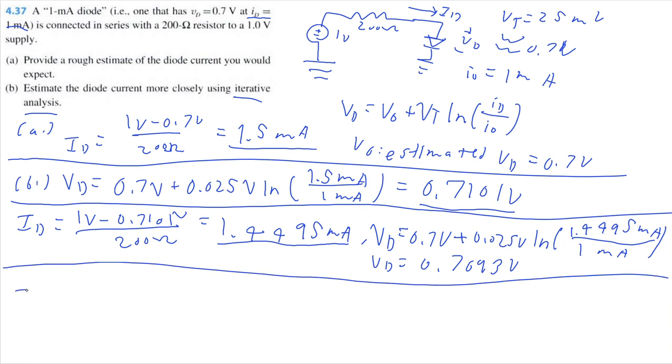Let's recalculate our current again. 1 volt minus 0.7093 volts divided by 200 ohms. So, I'm getting 1.4535 milliamps. So, we can also see our current isn't really changing much either. This means we're getting pretty close.